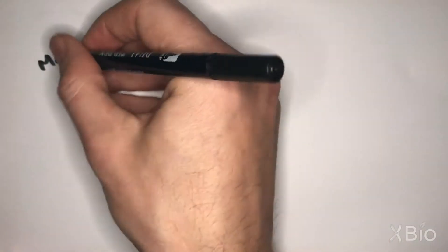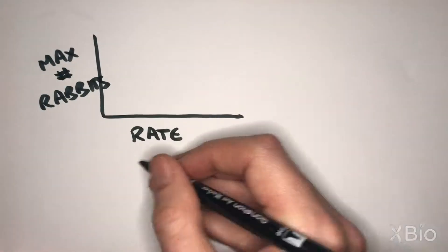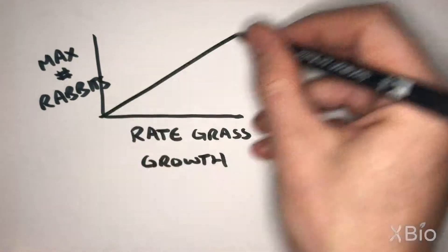What if we plot the maximum number of rabbits as a function of the rate of grass growth? Now we get a straight line.